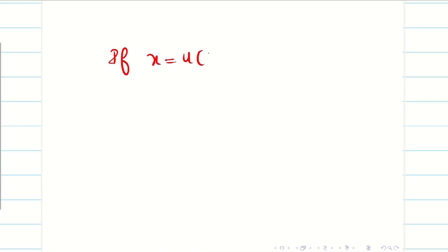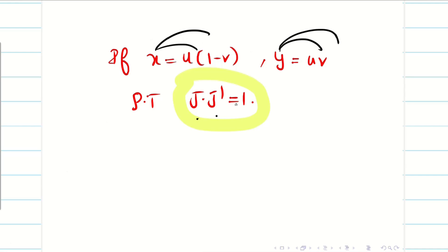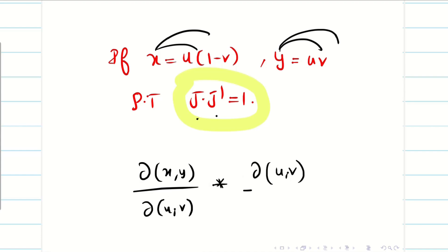Given x = u(1 - v) and y = uv, we need to prove that j into j dash equals 1. This follows from the property that j into j dash is always 1. But when they ask you to prove it, you have to find j as well as j dash. According to the given problem, x is a function of u, v and y is also a function of u, v. So we compute ∂(x,y)/∂(u,v), then find ∂(u,v)/∂(x,y), and their product should be 1.